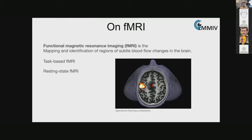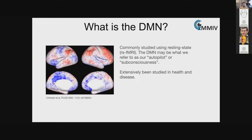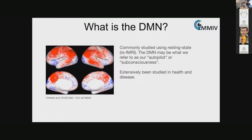The DMN — default mode network — is commonly studied using resting state fMRI. In simplified terms, you could think of it as the autopilot or subconsciousness of the brain. These are regions that fluctuate in activity when we're doing nothing — studied by having someone lie in a scanner with eyes open, focused on a blank screen or crosshair, not doing anything. This has been studied extensively in health and disease.